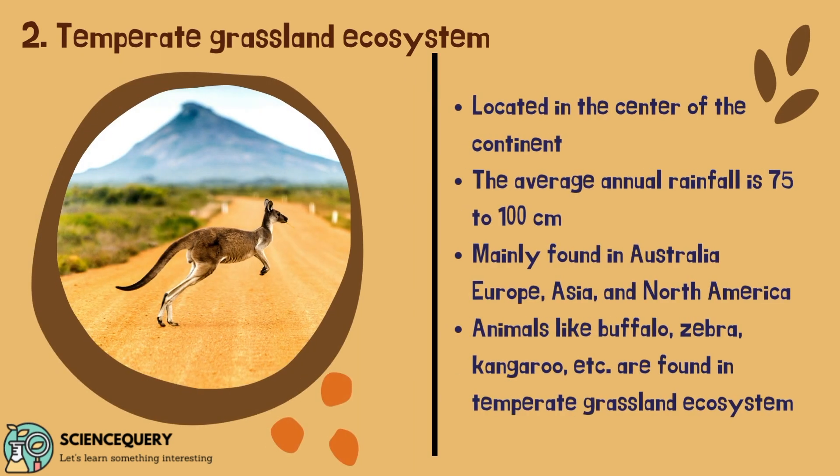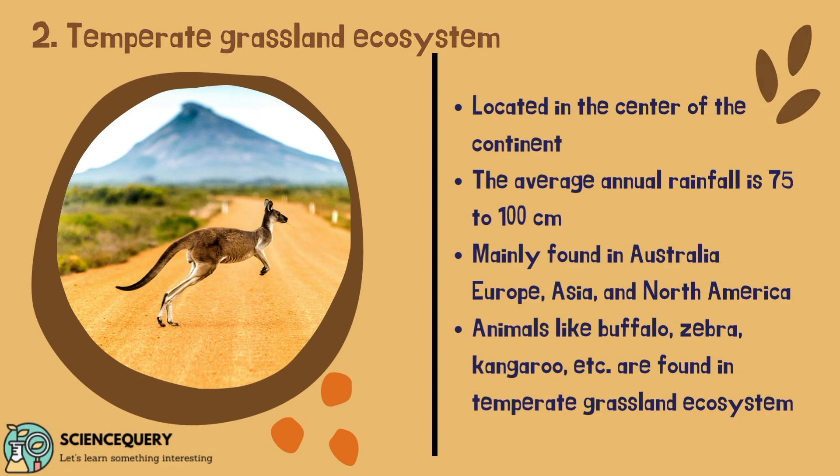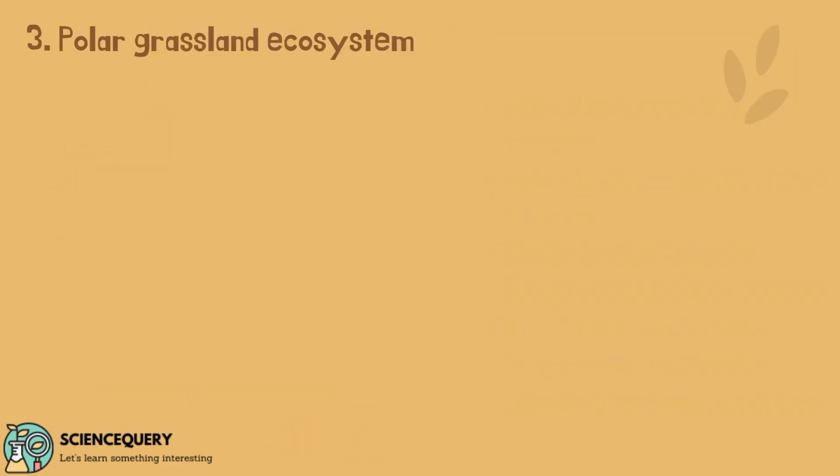The second type of grassland ecosystem is the temperate grassland ecosystem. It is located in the center of the continent. The average annual rainfall is 75 to 100 cm. It is mainly found in Australia, Europe, Asia, and North America. Animals like buffalo, zebra, kangaroo, etc. are found in the temperate grassland ecosystem.